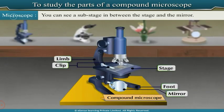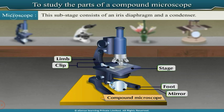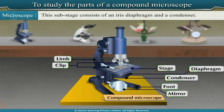Between the stage and the mirror is a sub-stage, which consists of an iris diaphragm and a condenser. The iris diaphragm is a wheel-shaped metal disc that regulates the size of the aperture.